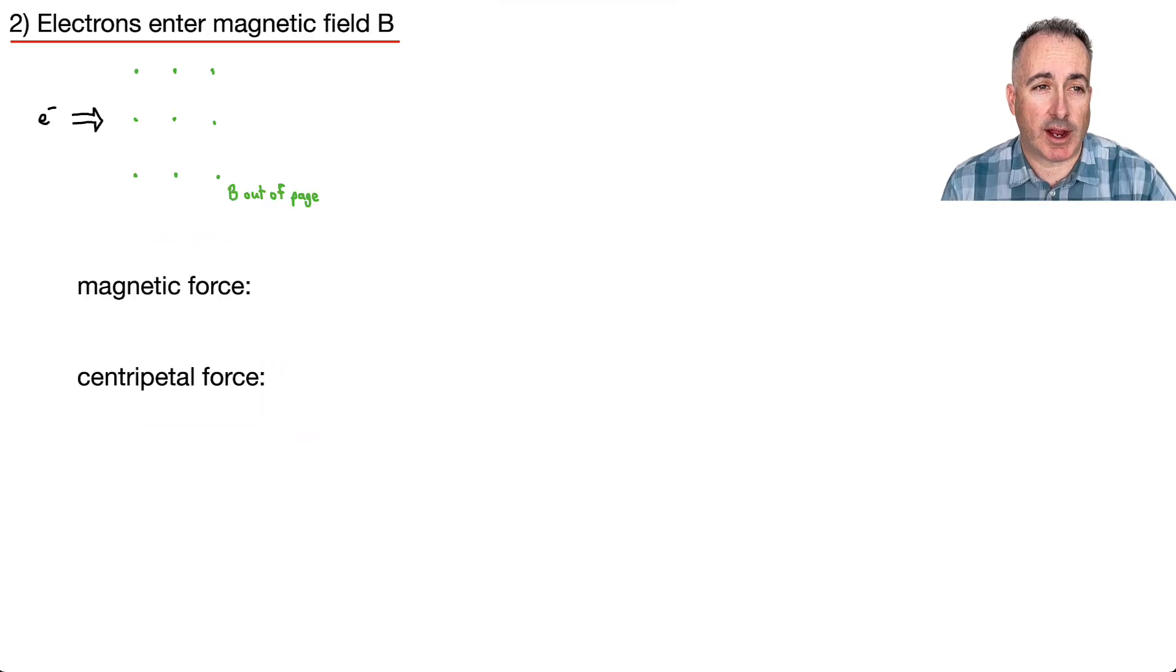Let's look at what happens to these electrons after they've been accelerated. They enter region 2, where they enter a magnetic field. Let's assume the magnetic field B is out of the page, coming towards you, which is why I drew dots. These are electrons, so they're negatively charged. If I want to find the force on them, I'll need hand rule number 3. Because they're negative, I'll use left hand rule number 3.